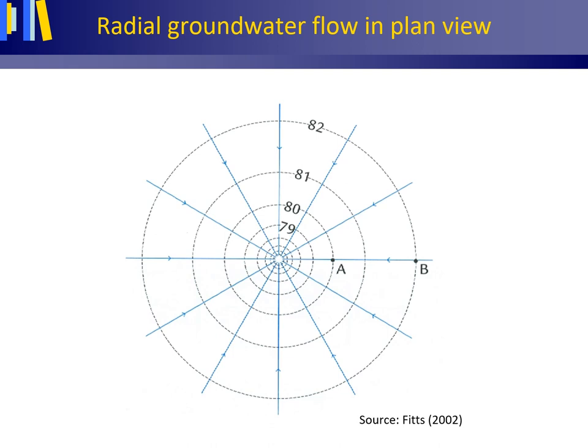Because the groundwater flow is steady, the volume flux perpendicular to the area of the parallel cylinders is constant. As these cylinders — the circles in this plan view — become smaller in the direction of the pumping well, in order for the volume flux to remain constant, the volume flux density must increase towards the pumping well. Thus, since the aquifer is homogeneous, the hydraulic gradient also increases towards the pumping well.